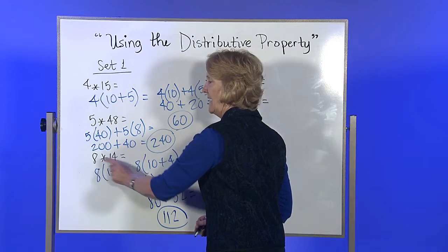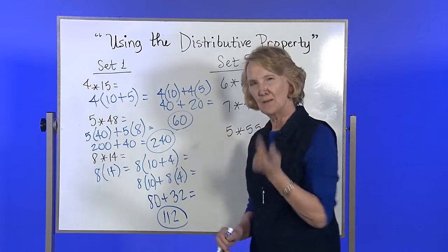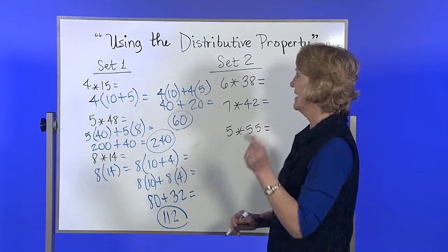8 times 10 is 80, 8 times 4 is 32, 30 and 80, so it becomes an easy thing in your brain. That's what I want.